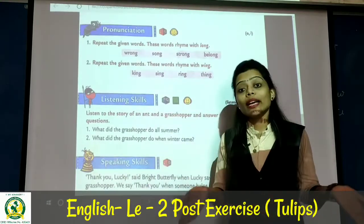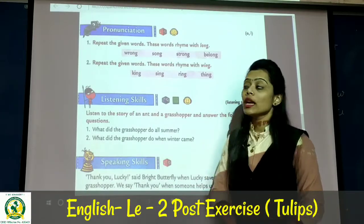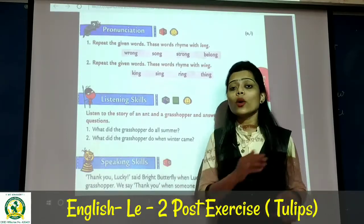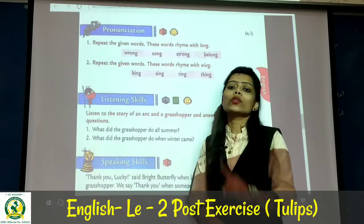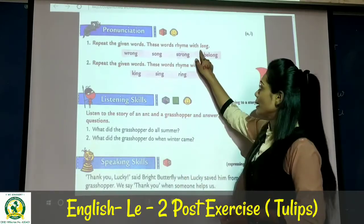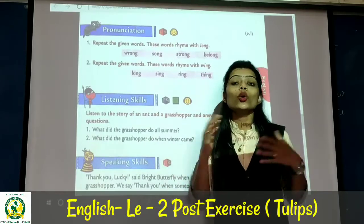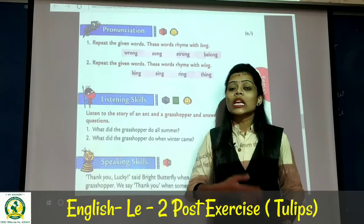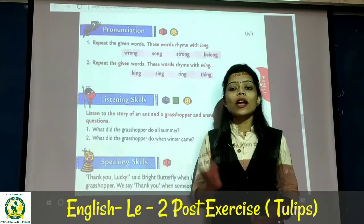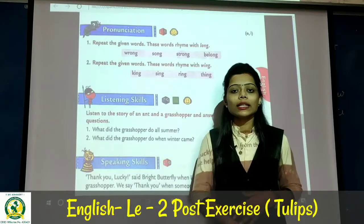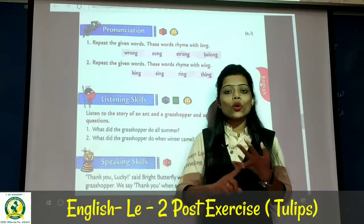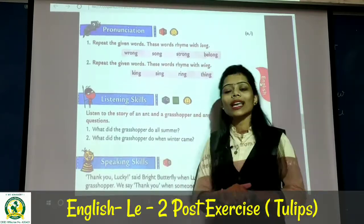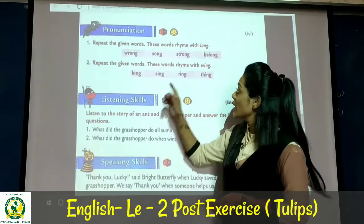In pronunciation we have rhyming words. One word is given and you find two or three rhyming words that have meaning. The given word is L-O-N-G, long. Rhyming words for 'long' can be: wrong, song, strong, belong — these are all rhyming words of 'long.'